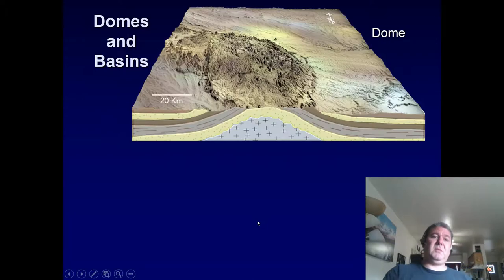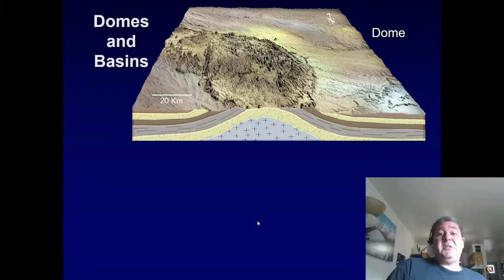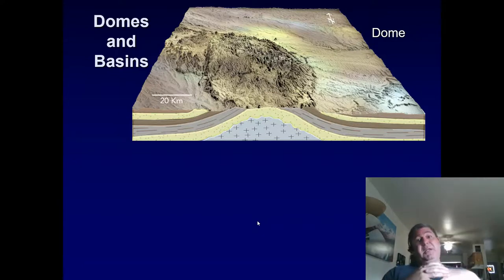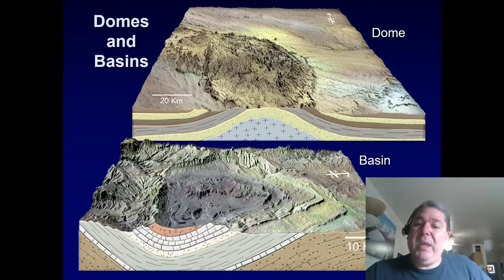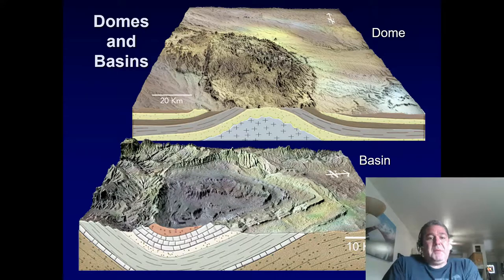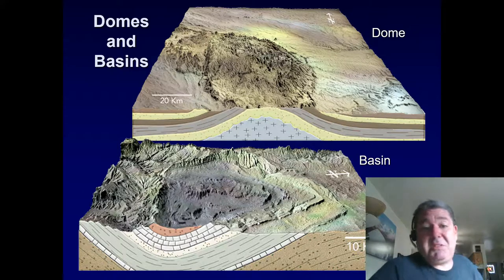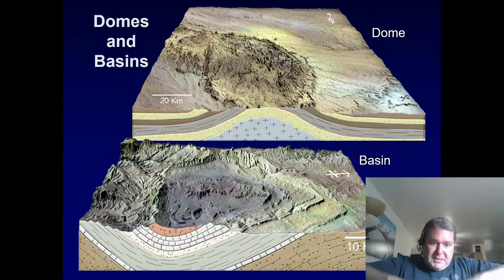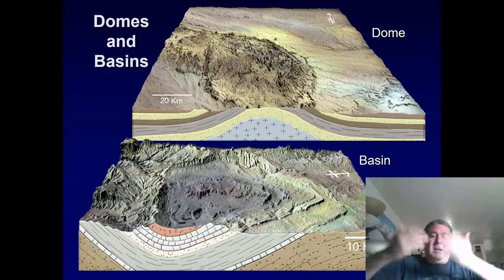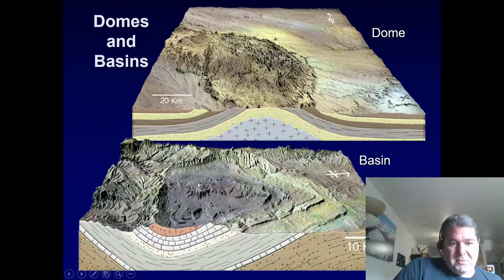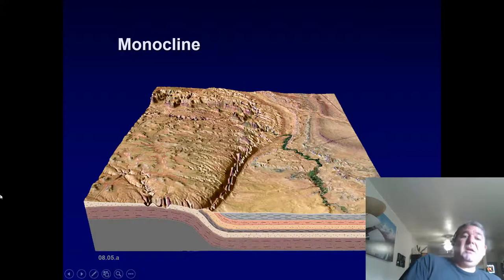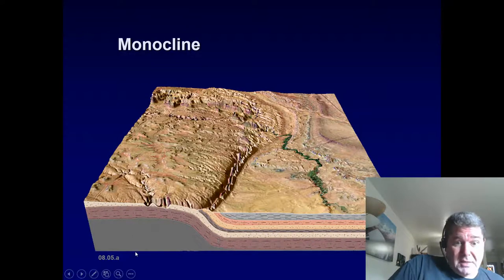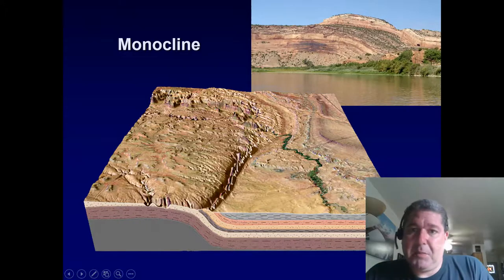We can also create domes and basins. Domes form when a large magma intrusion — a laccolith — pushes the area above it upward like a pimple. A basin is the opposite, forming a bowl shape; here in Michigan, we live in such a sedimentary basin, where sediments shed in push the basin down under their own weight. A monocline is like half an anticline — only one side — resulting from a fault that hasn't fractured all the way to the surface.